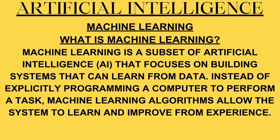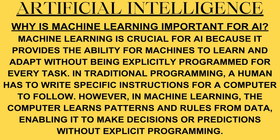Machine Learning is a subset of Artificial Intelligence that focuses on building systems that can learn from data. Instead of explicitly programming a computer to perform a task, Machine Learning algorithms allow the system to learn and improve from experience. Machine Learning is crucial for AI because it provides the ability for machines to learn and adapt without being explicitly programmed for every task. In traditional programming, a human writes specific instructions for a computer to follow. However, in Machine Learning, the computer learns patterns and rules from data, enabling it to make decisions or predictions without explicit programming.